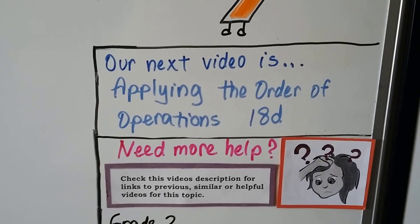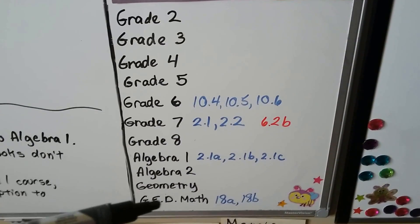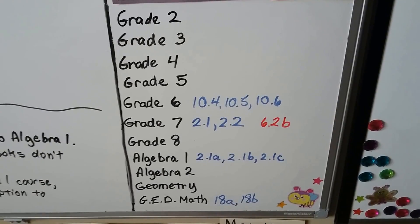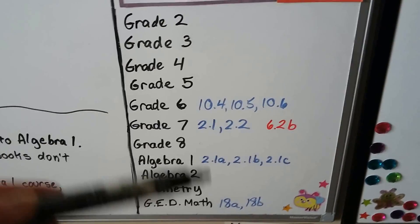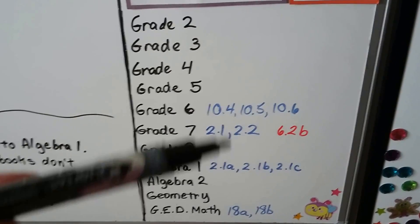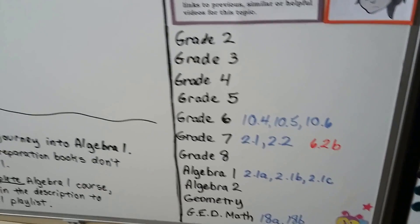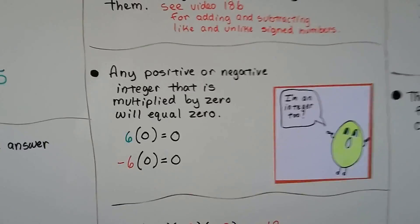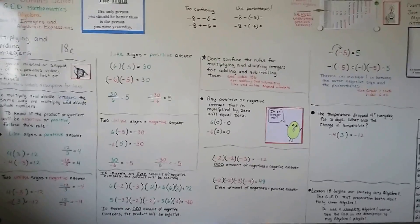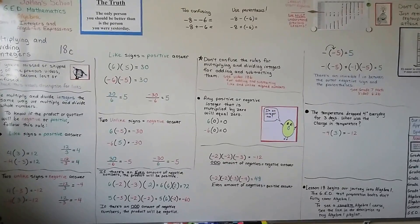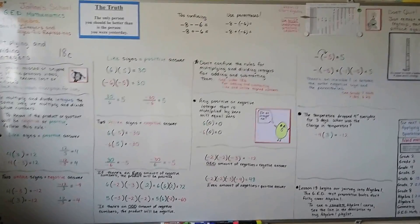Our next video is going to be applying the order of operations — it's lesson 18d. There are links to Grade 6, Grade 7, Algebra 1, and the previous GED videos in the description. If you're really confused, watch every single one of them — by the time you're finished, you'll know it by heart. It would take less than an hour to watch all those videos and have this memorized. We'll talk about the order of operations and algebraic expressions and equations in the next video.